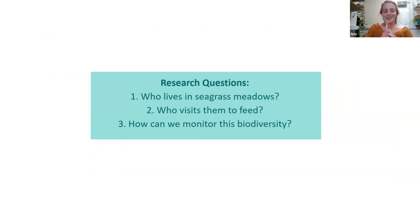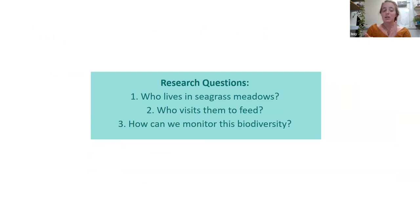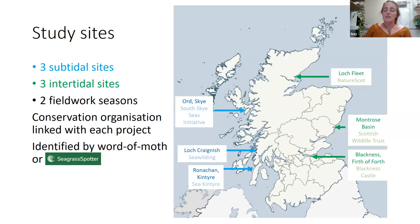Here's a simple overview of what my PhD is trying to do. I want to know firstly who is living in the seagrass meadows in Scotland, who is visiting them more briefly to feed on things, and how we can monitor this biodiversity — are there some new methods we could use to make it easier?